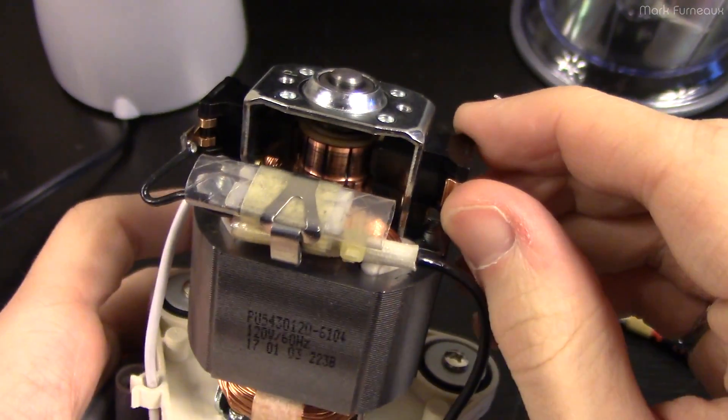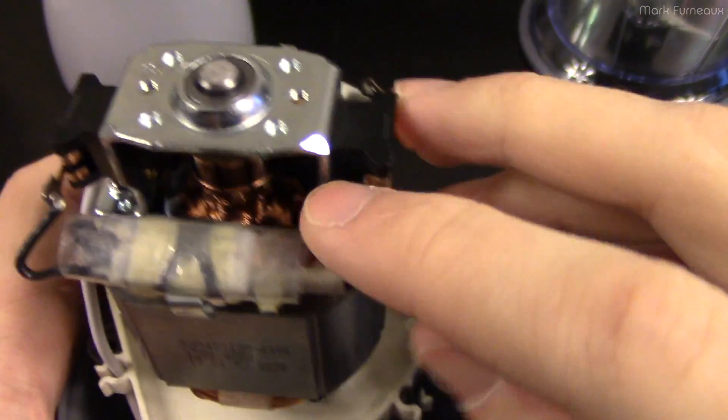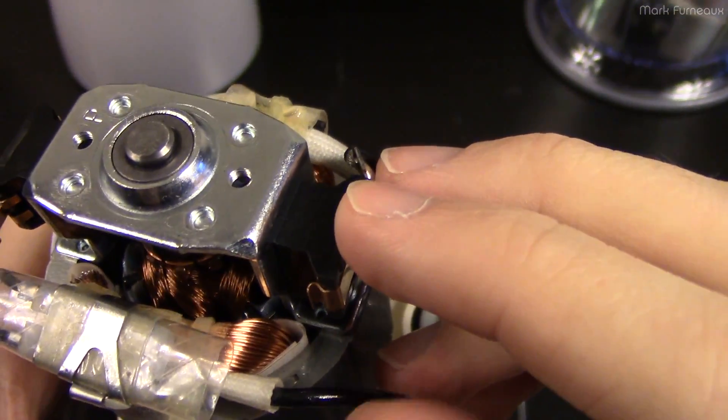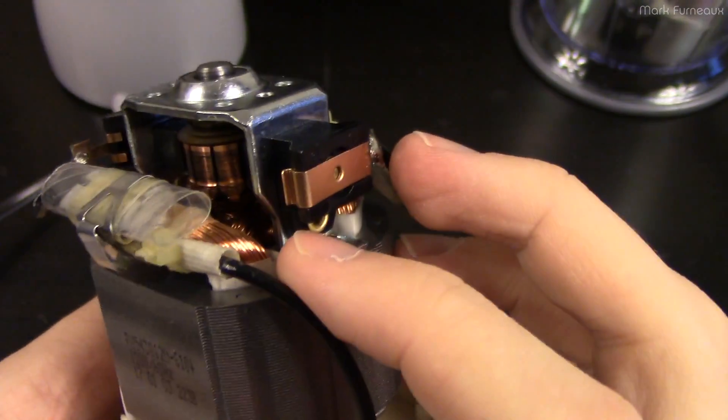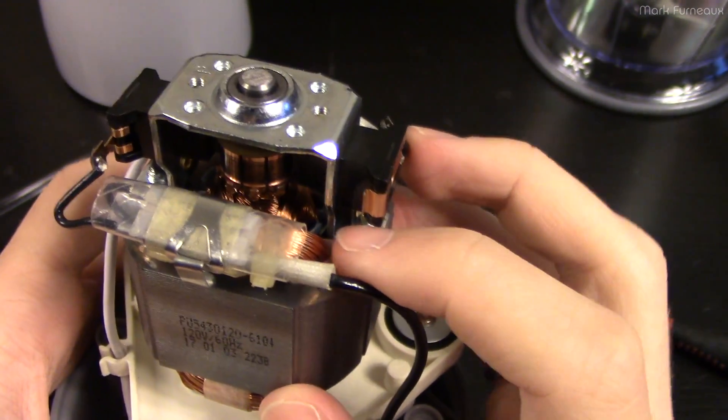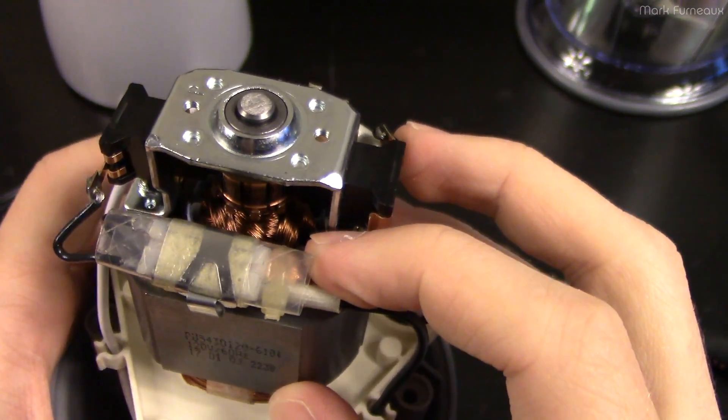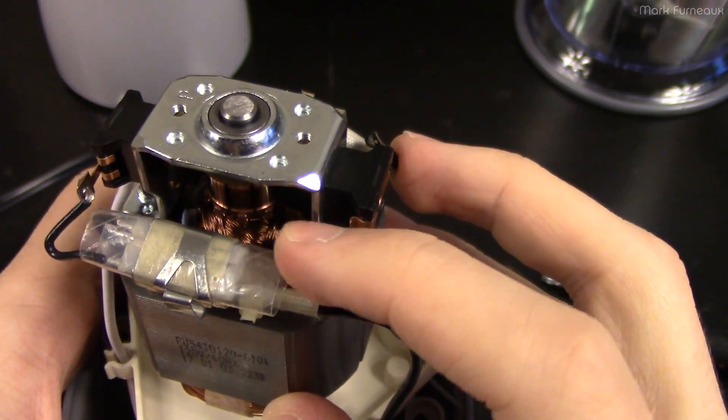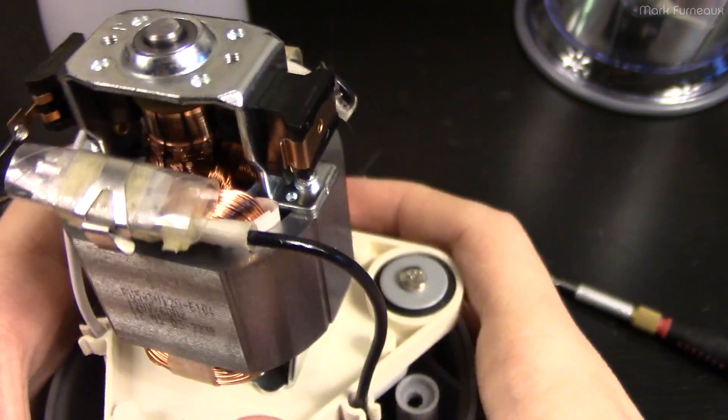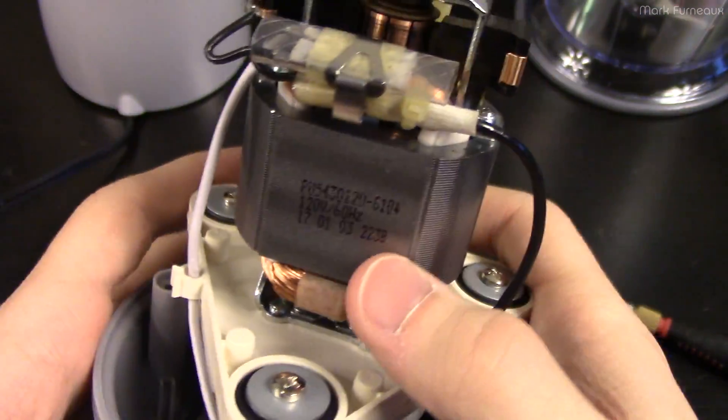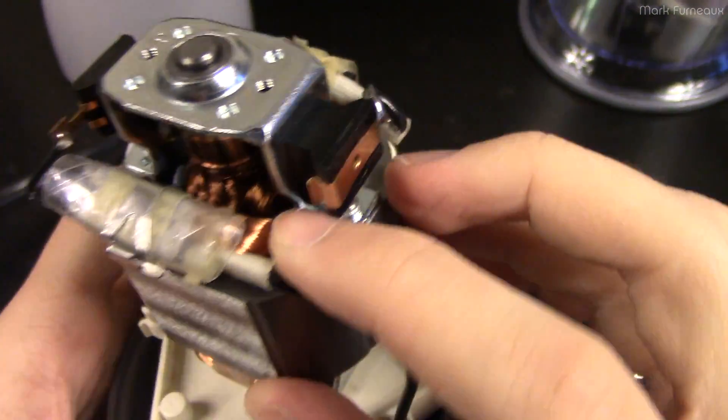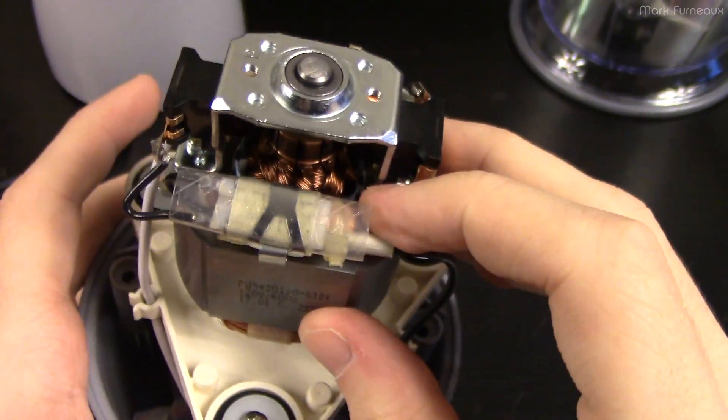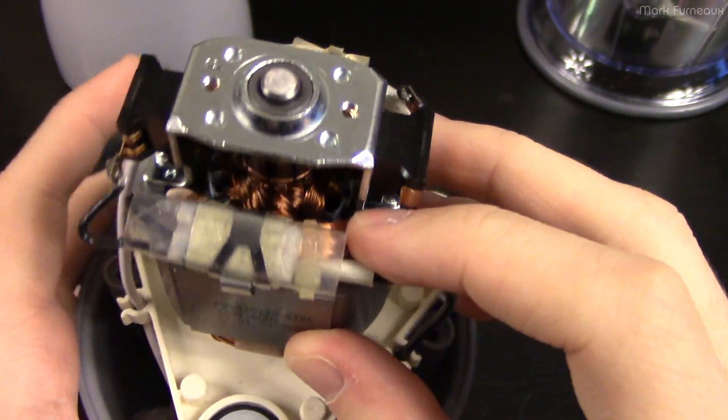There's some carbon on the commutator bars. Nothing too bad yet. You'll notice that there is no epoxy down there on the wires as they're terminated into the comm bars. So likely those will fail with time. This is probably not going to be a high-hour motor. It's not going to live for too many running hours.